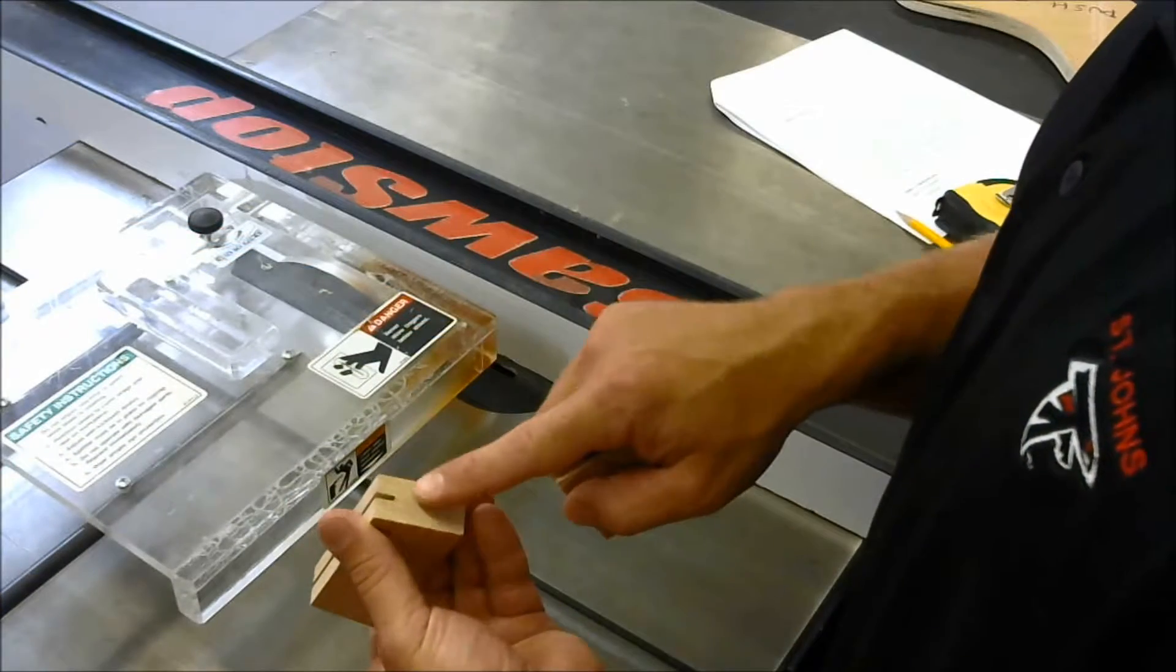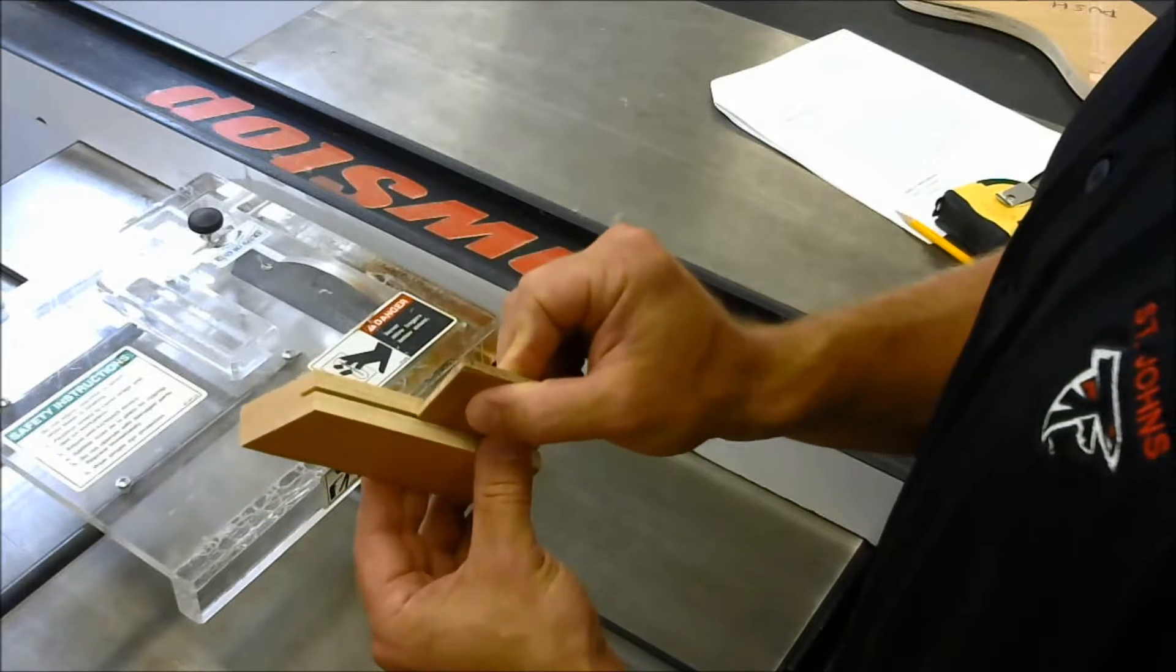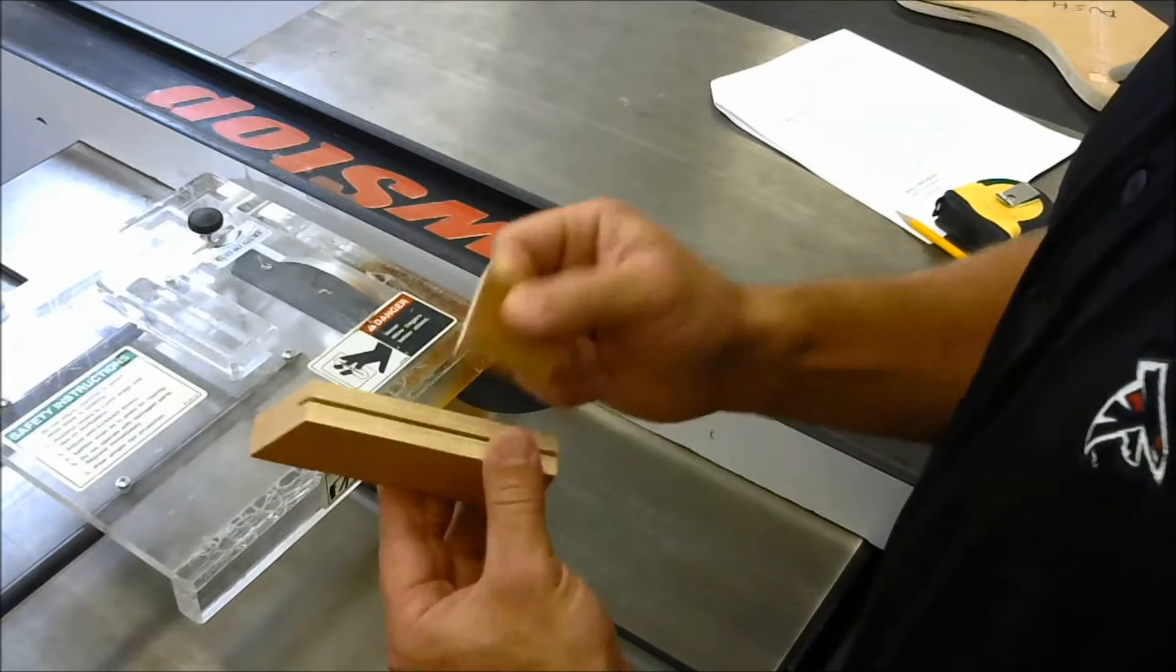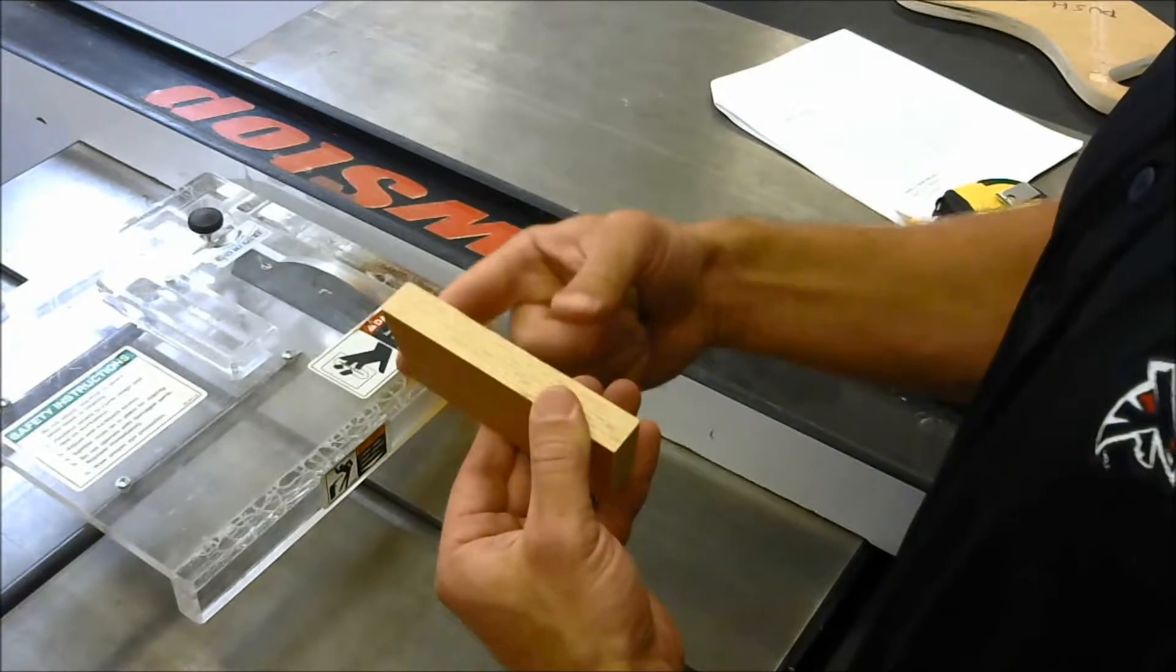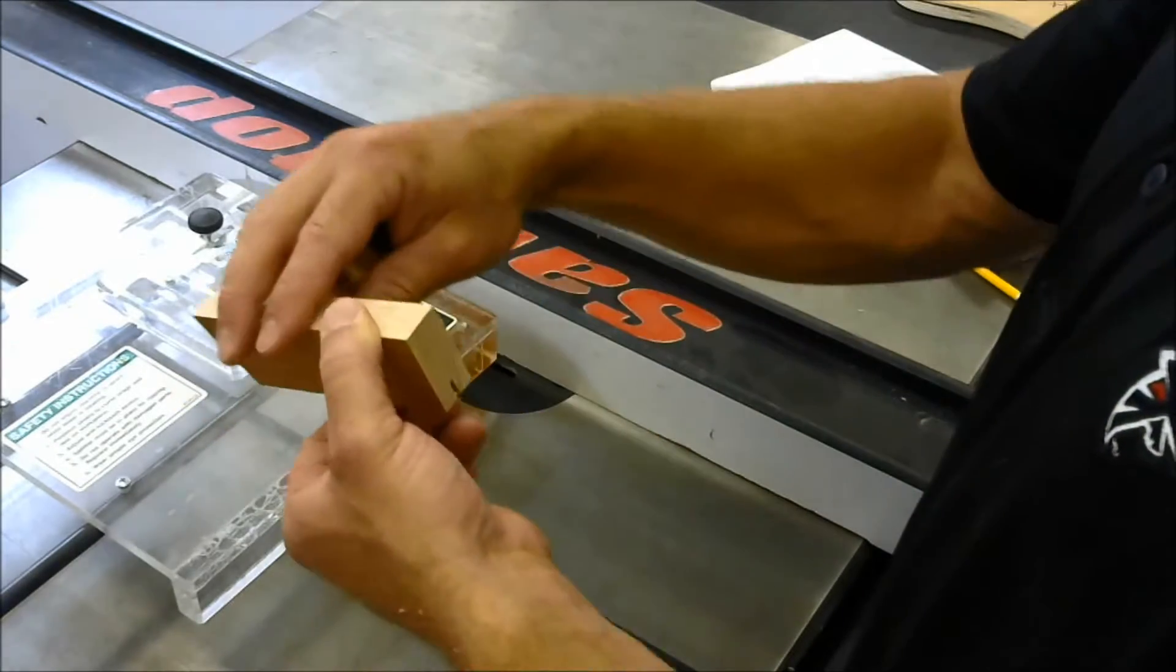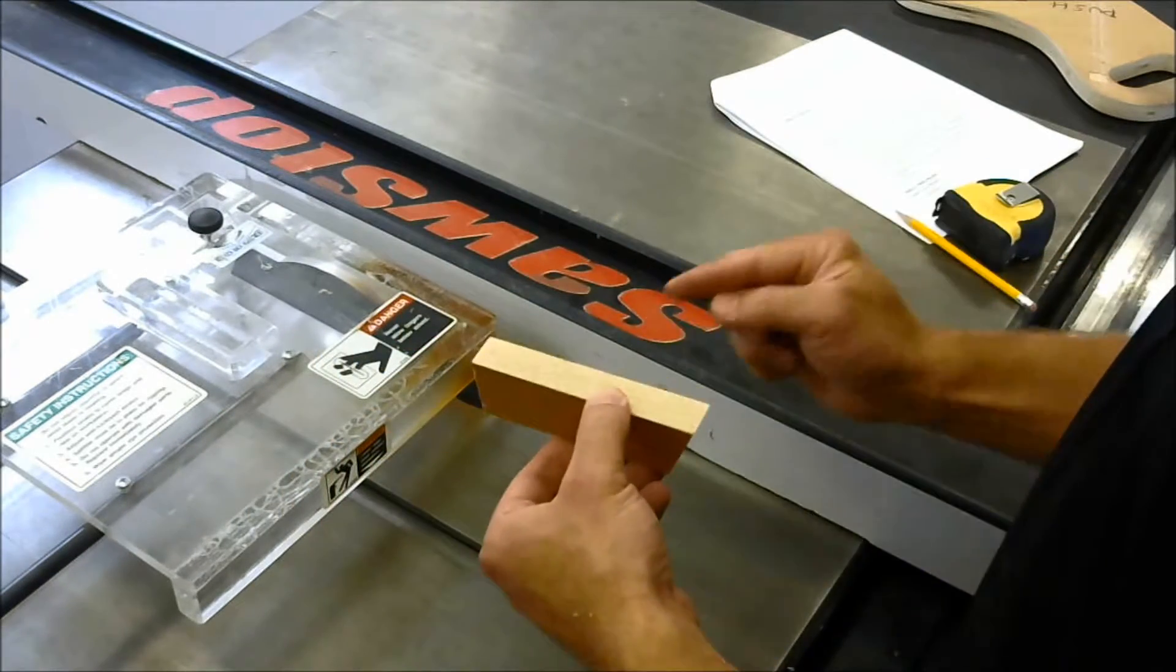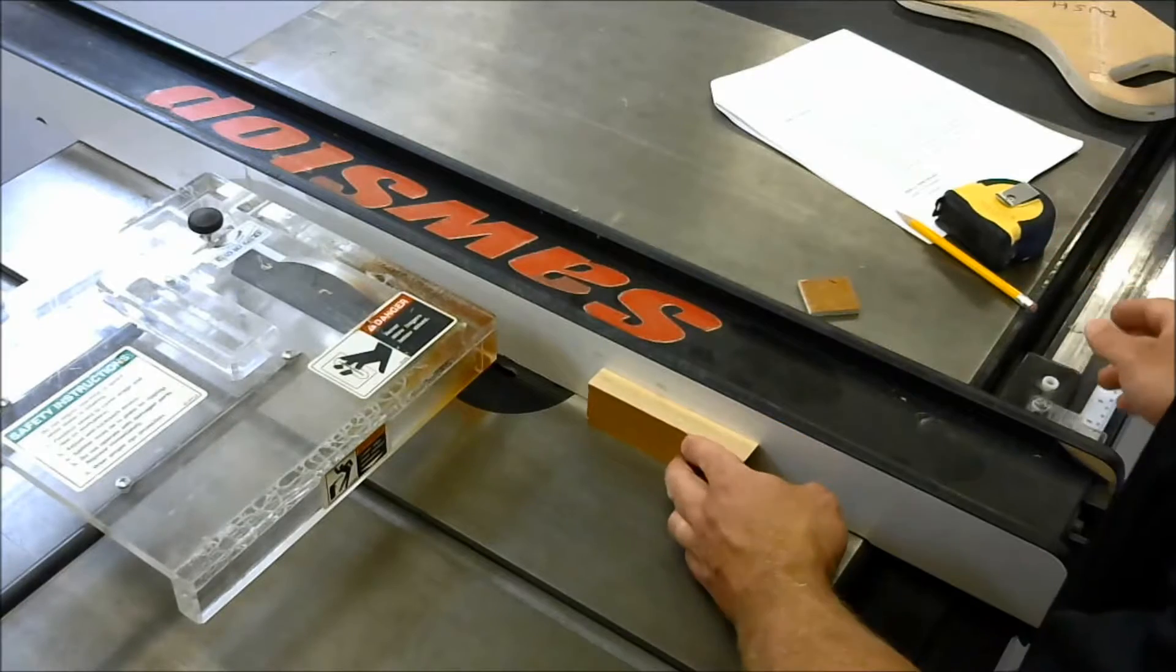Now that we have our depth of cut set, we need to set the width so that our plywood piece will fit into the groove. We've been sending our board through with the angle forward. To center this cut, we're going to rotate it this way and send it through. So now we'll have equal distances from the fence on both cuts.